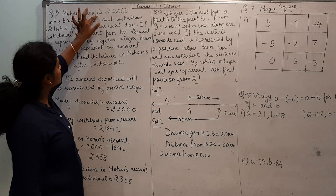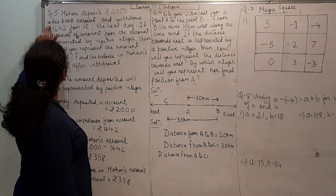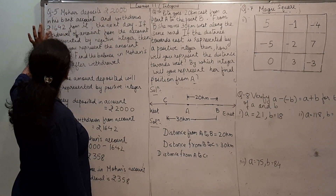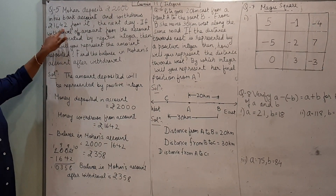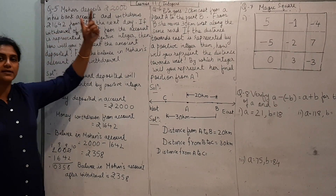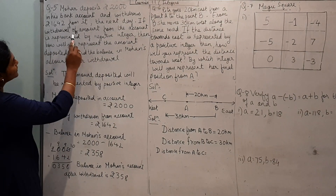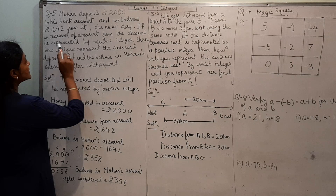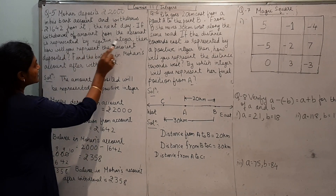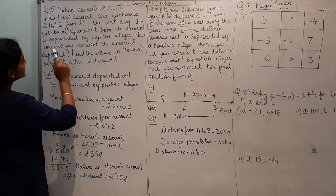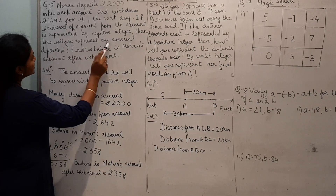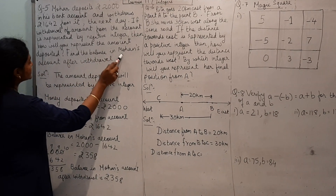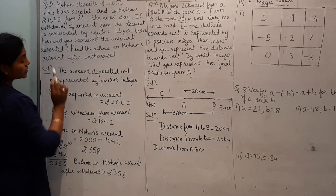Mohan deposits Rs. 2000 in his bank account and withdraws Rs. 1642 from it the next day. If withdrawal of amount from the account is represented by a negative integer, then how will you represent the amount deposited? Find the balance in Mohan's account after withdrawal.